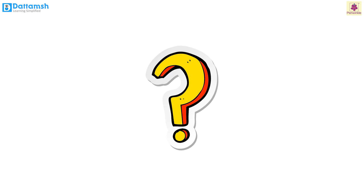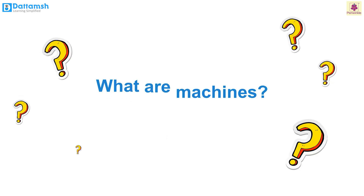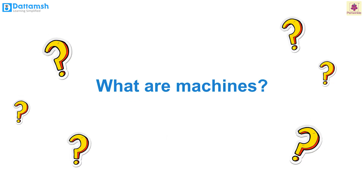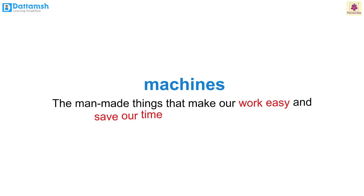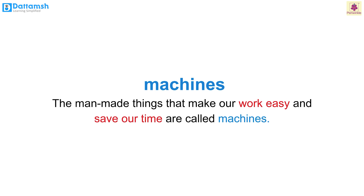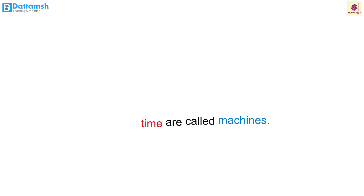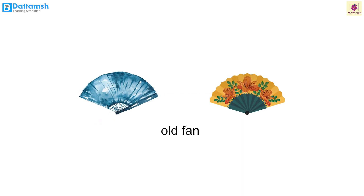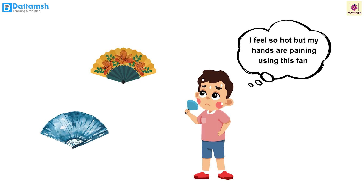Now here comes the big question — what are machines? The man-made things that make our work easy and save our time are called machines. For example, many years ago this is how fans looked — you had to move it with your hand.